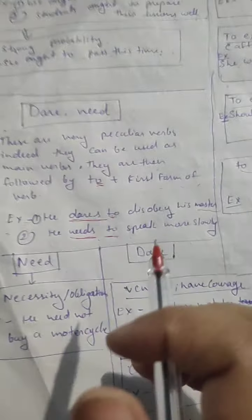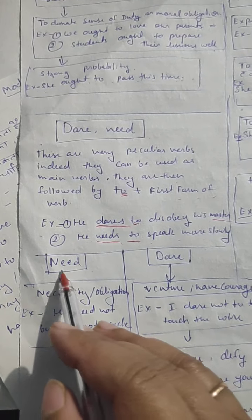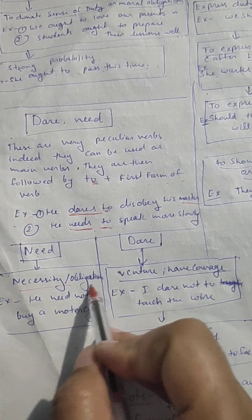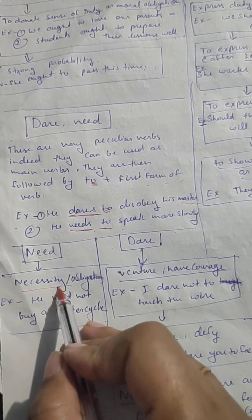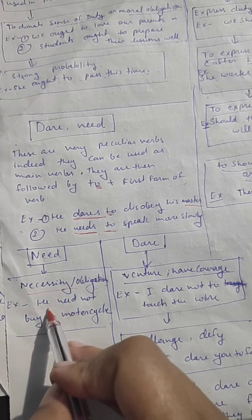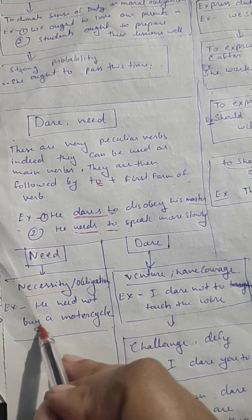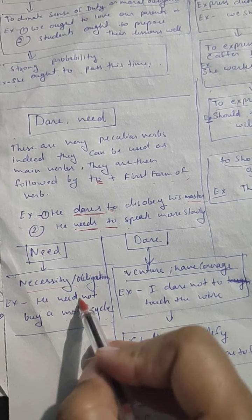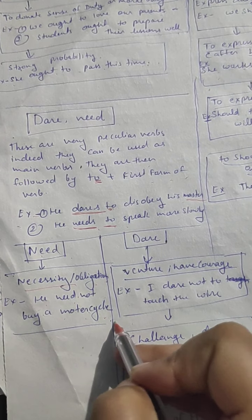Now we look at the conditions in which we use dare and need. Need - the condition is necessity and obligation, in which we use need. Like, he need not buy a motorcycle.